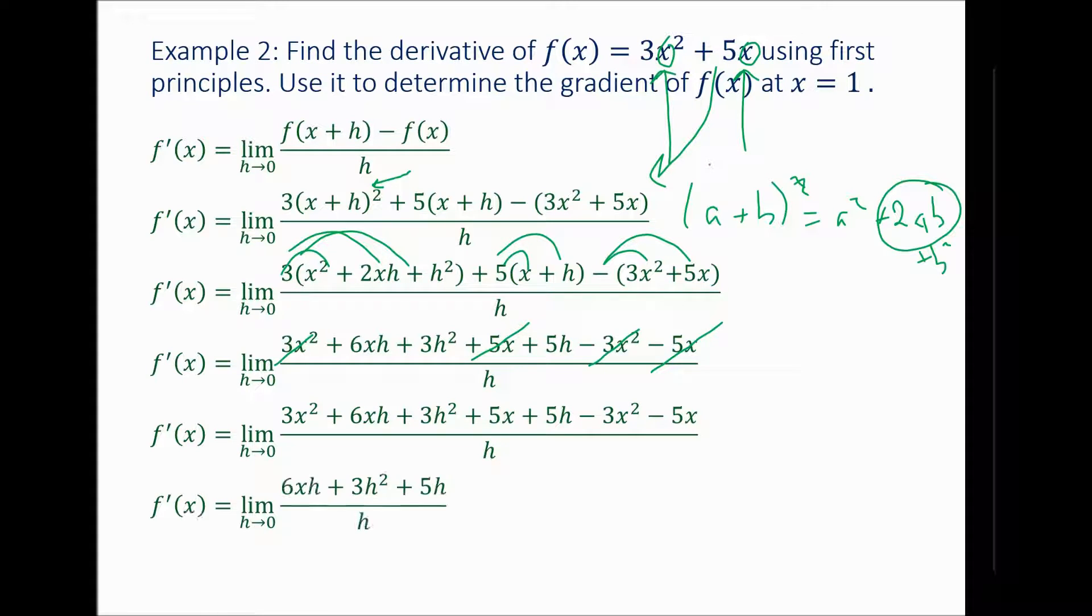Going through and now I have simplified it. So I've simplified my numerator. So now I'm going to have a look and see, if I was to factorize an h out of the top, that would be h times 6x plus 3h plus 5. And then I would cancel the h, top and bottom. Or you can just do that kind of going through one term at a time. So I'm going to end up with 6x, plus 3h, plus 5.